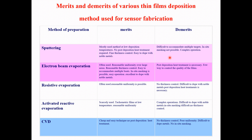The demerits of sputtering techniques when utilized for sensor fabrications include: it is difficult to accommodate multiple targets — normally we have a single target inside the sputtering chamber. In-situ masking is not possible, and complex operations. These are the demerits of sputtering for sensor fabrications.